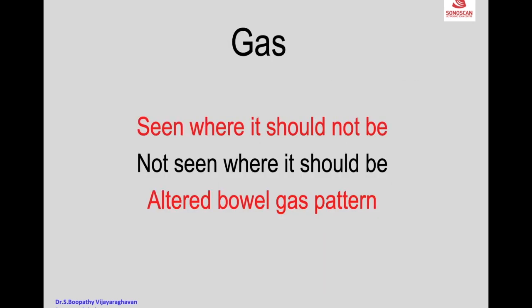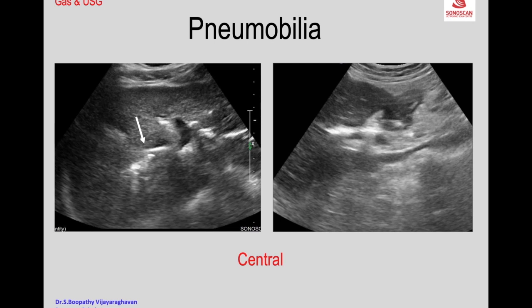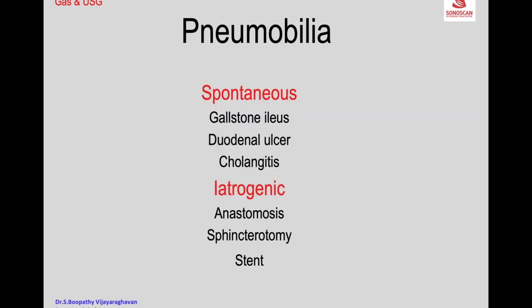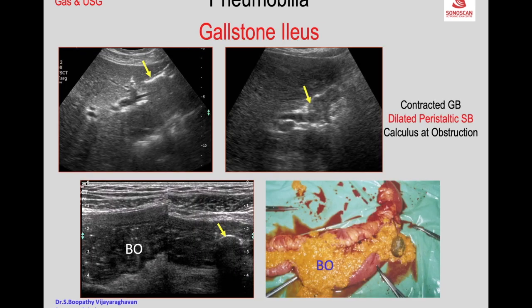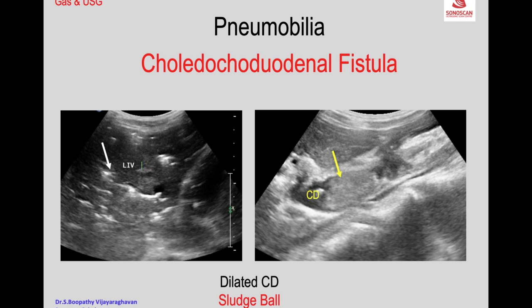I will describe various case scenarios where gas is useful. Echogenic lines indicate pneumobilia, and when you look for the common duct the gallbladder will not be seen. This may occur after anastomosis, after sphincterotomy to retrieve a calculus, or after placement of a stent for a gallstone causing obstruction. These are features of gallstone ileus.